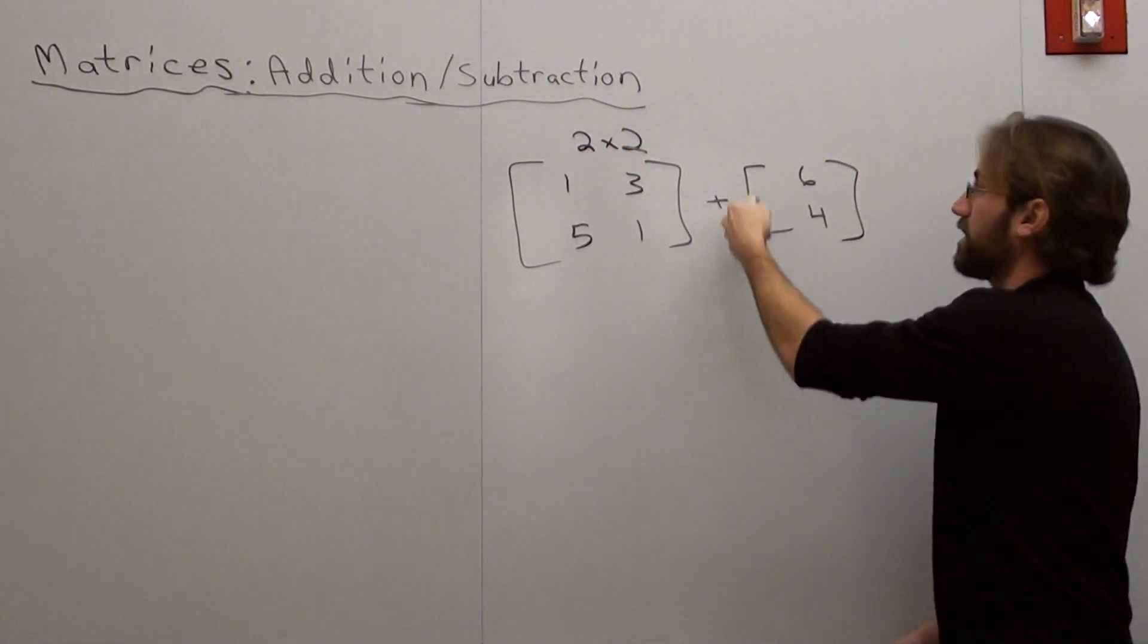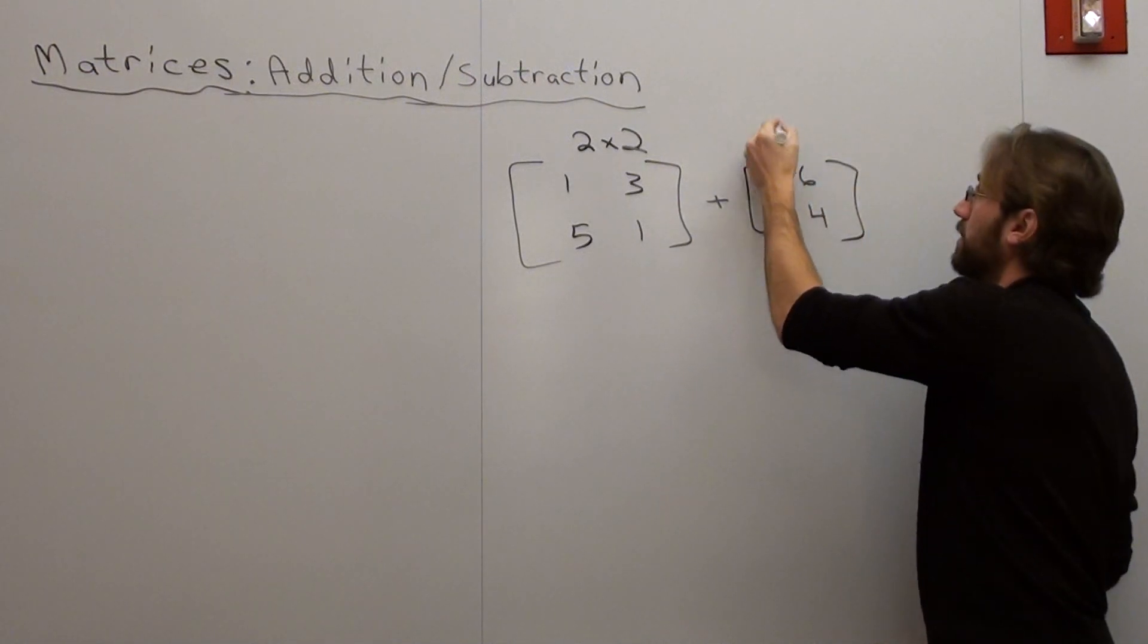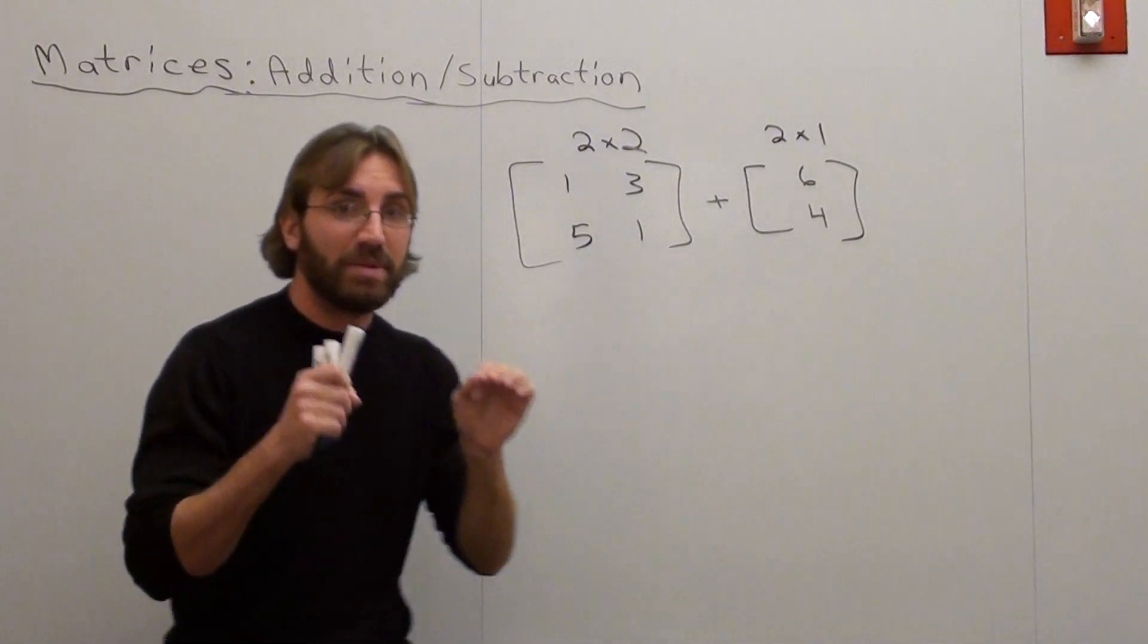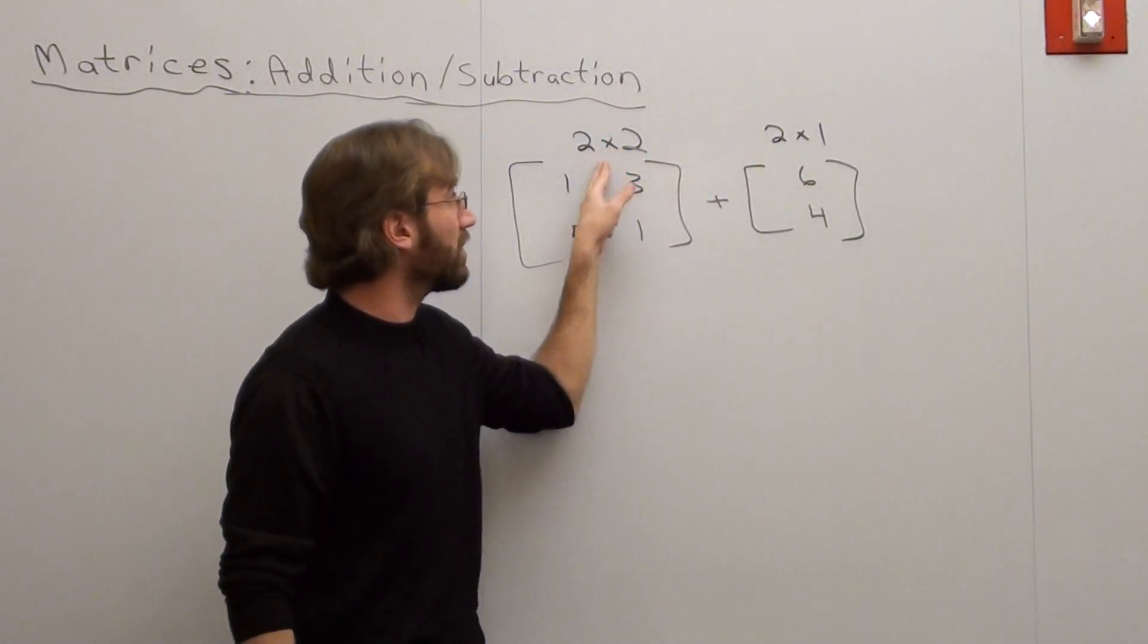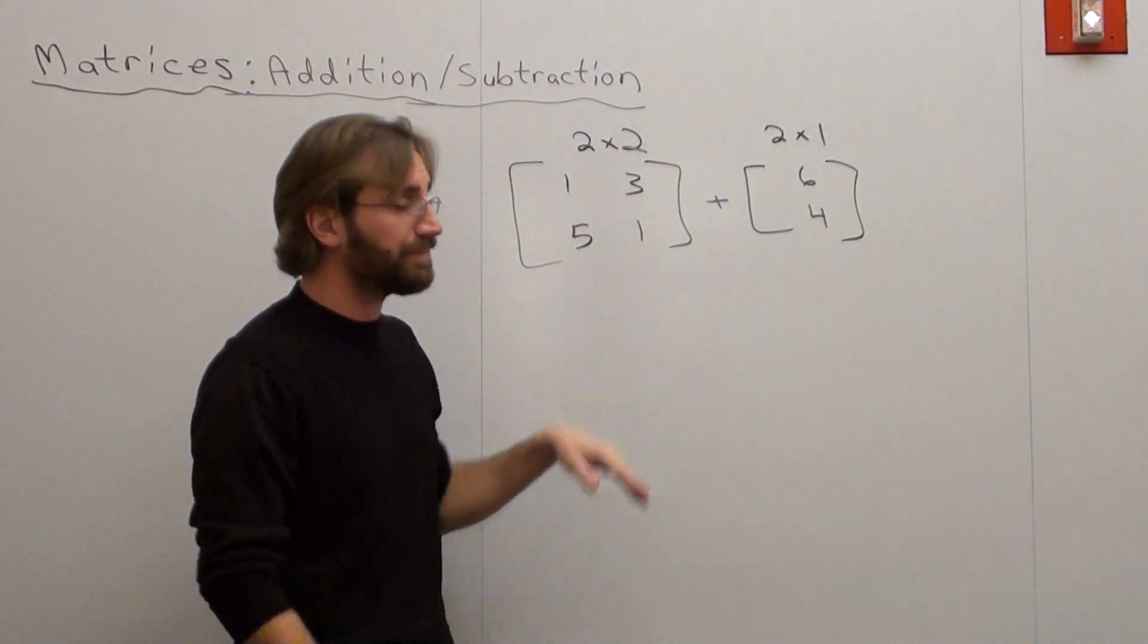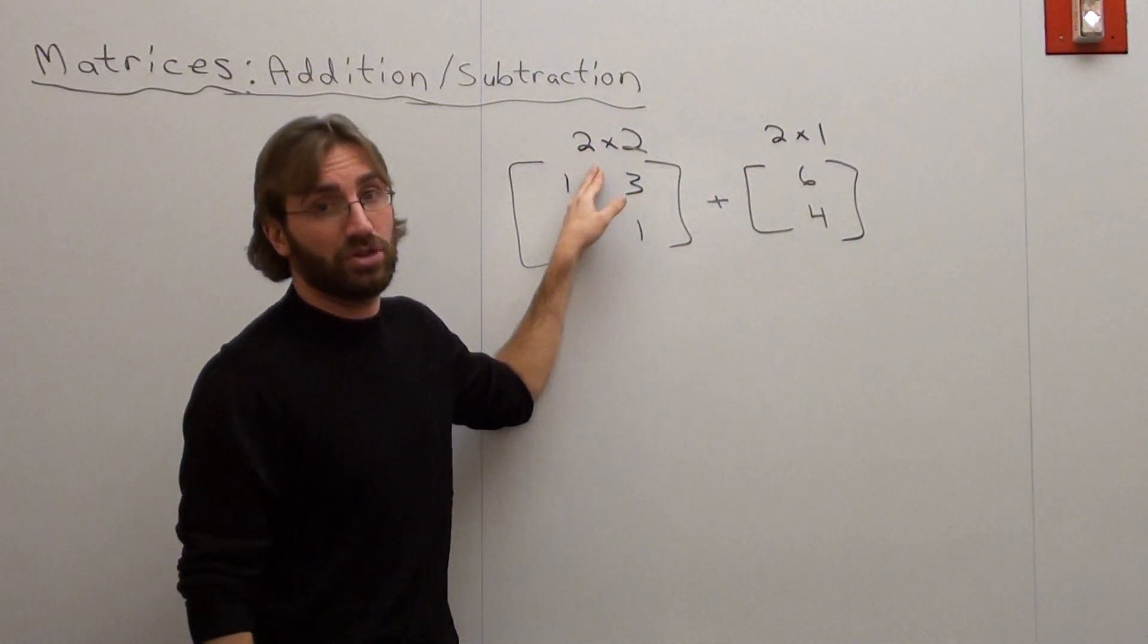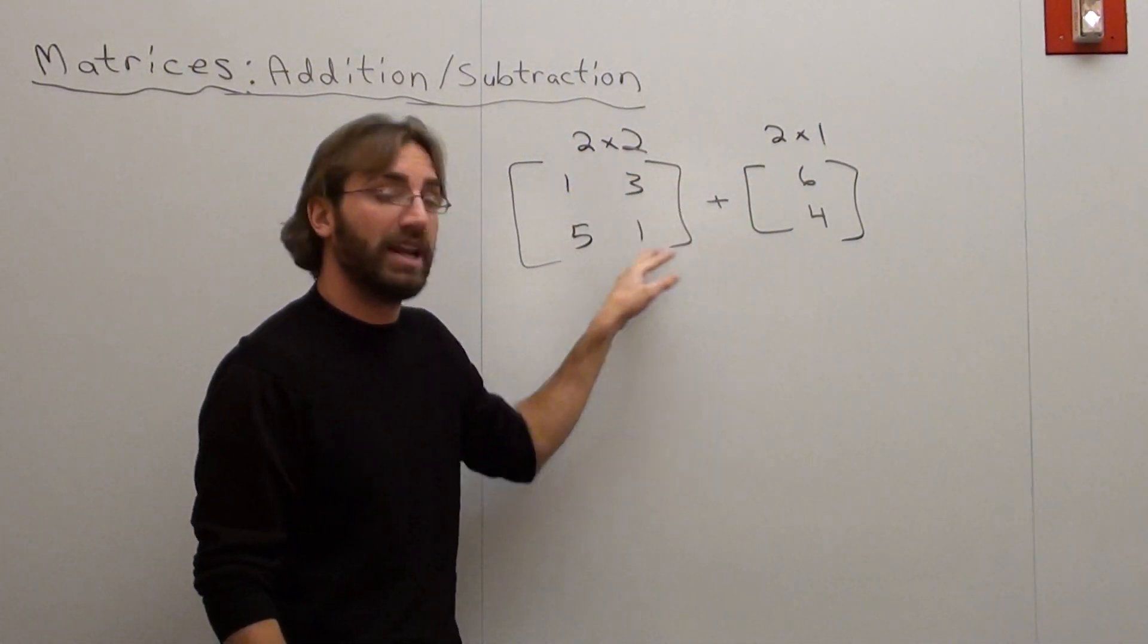This matrix is a 2 by 1. You cannot add them. If they both don't have the same exact dimensions, if this isn't a 2 by 2 and this isn't a 2 by 2, it doesn't work. Example, if this is a 2 by 1, this better be a 2 by 1. Since it's not, you can't add or subtract them.